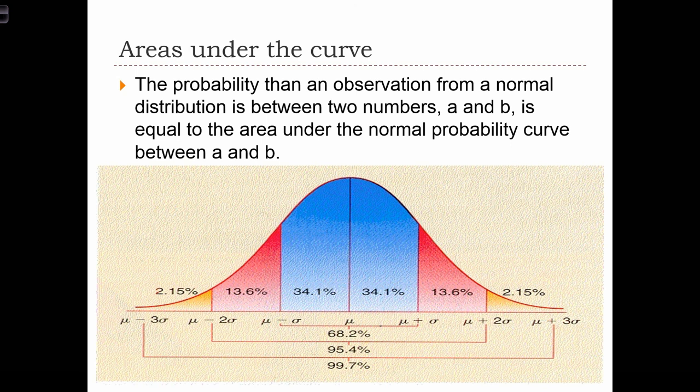So in this example, what we see is that the probability of obtaining a value between, say, the mean mu of the normal distribution and a value that's equal to mu plus one standard deviation away from the mean, well, that probability is defined by this area, and it's given here as 34.1%.